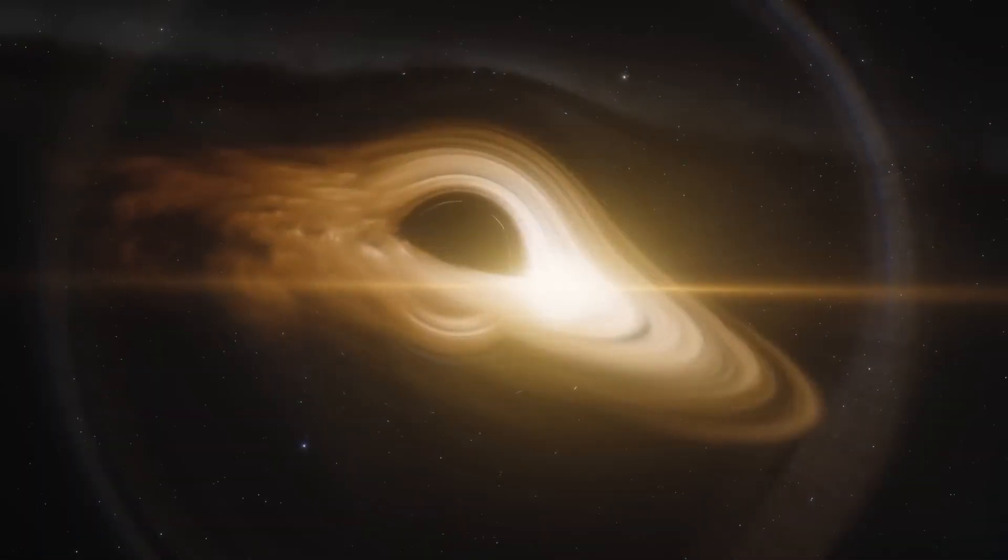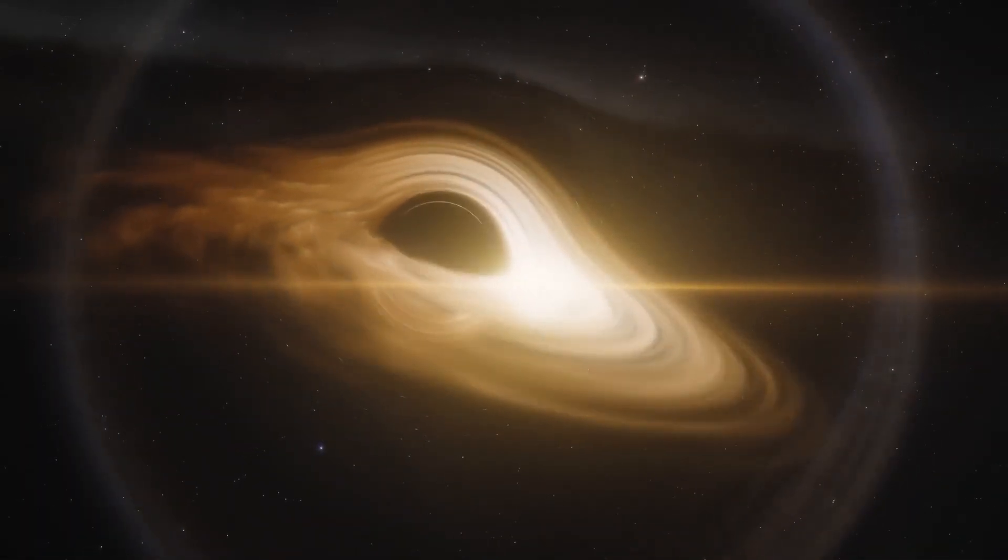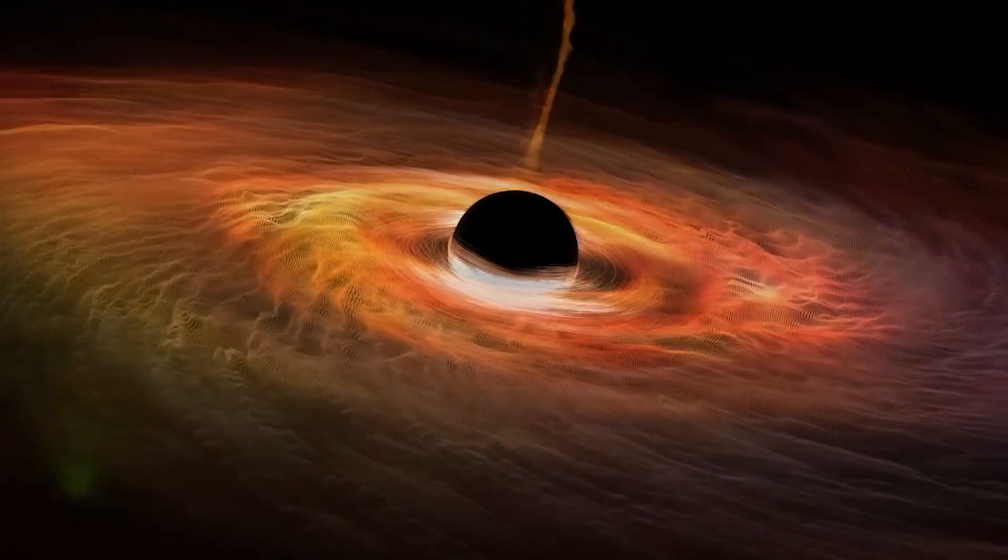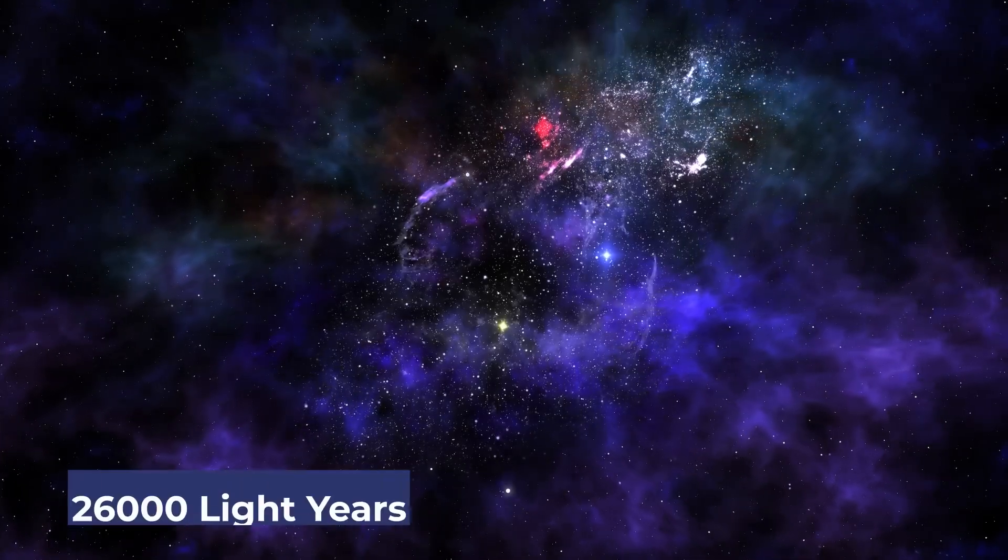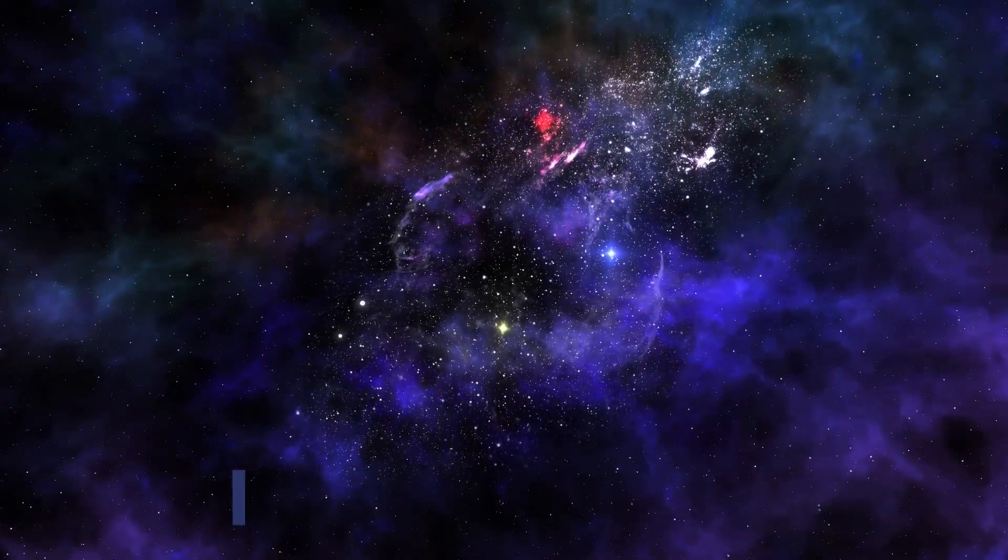Deep within our Milky Way, an awe-inspiring behemoth lurks, the Sagittarius A asterisk. This cosmic titan outweighs our sun by a staggering 4 million times and sits an astounding distance of about 26,000 light-years away from us, in the heart of our galactic home.